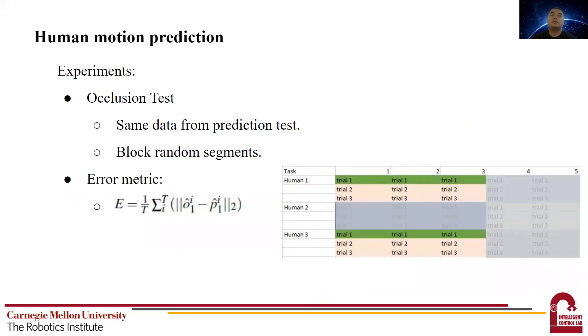The last test is occlusion test. This test basically means that we want to show that our method remains stable even when the partial of the arm, say the elbow, is not visible. For this test, we define the error metric as the following equation. Hat O is the prediction with occlusion and hat P is the regular prediction.